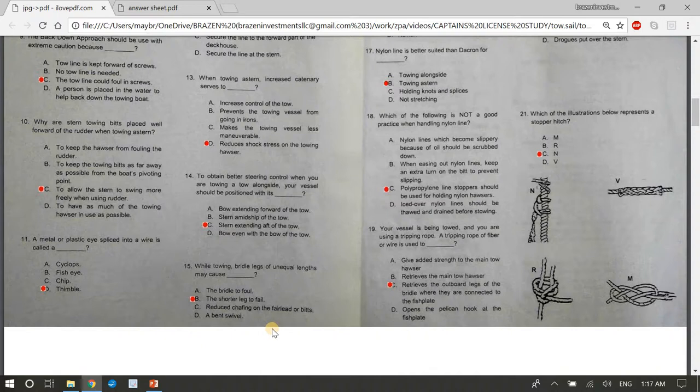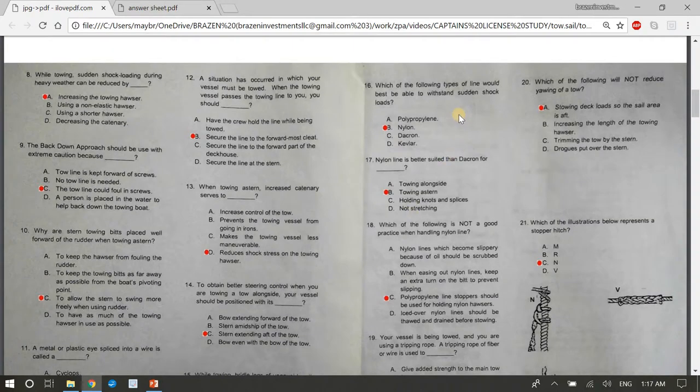Fifteen, while towing bridle legs of unequal lengths may cause blank. The answer is B, the shorter leg to fail. Sixteen, which of the following types of line would best be able to withstand sudden shock loads? The answer is B, nylon. Seventeen, nylon line is better suited than Dacron for blank. The answer is B, towing astern because it stretches. Eighteen, which of the following is not a good practice when handling nylon line? The answer is C, polypropylene line stoppers should be used for holding nylon housers. So which of the following is not a good practice when handling nylon line? The answer was polypropylene line stoppers should be used for holding nylon housers. That's not true. It's not the best practice.